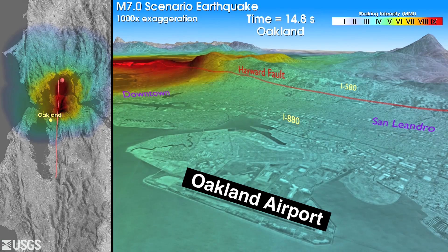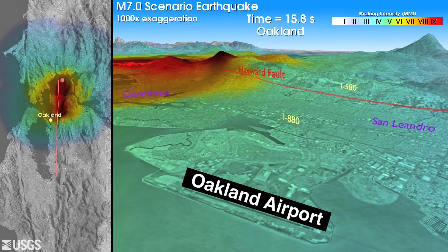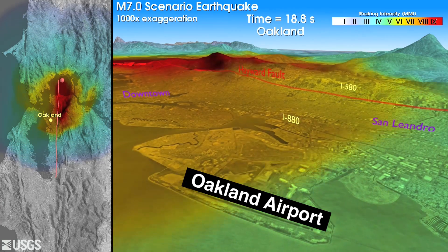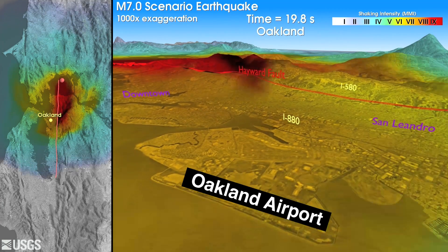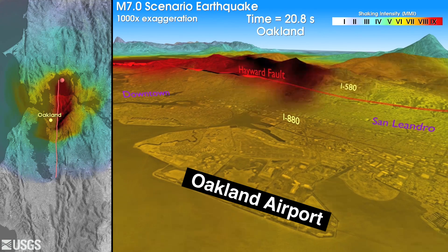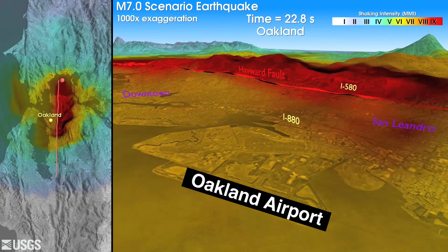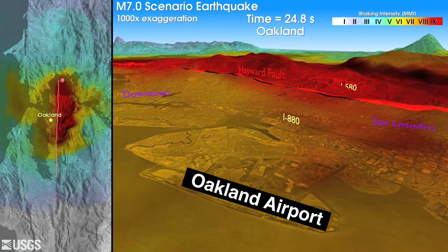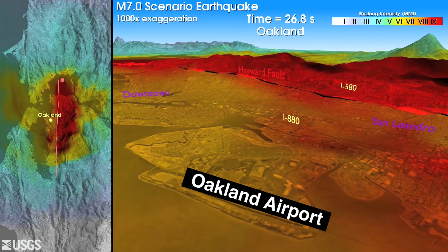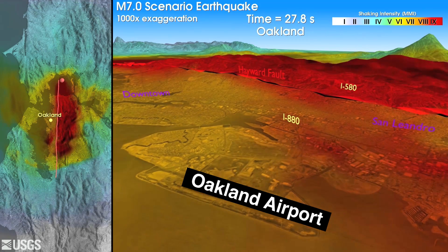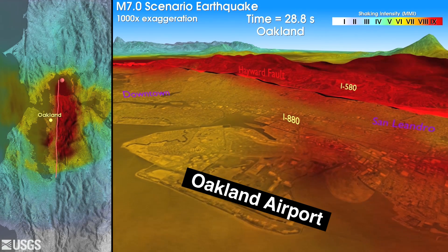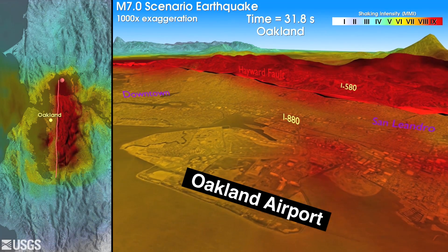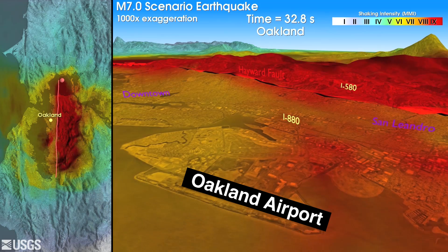The crust fractures along the fault as the seismic energy travels from the epicenter towards the south at a speed of about 7,000 miles an hour. Looking closely, you can see a rolling motion coming through. This is one of two surface wave types known as a Rayleigh wave. The second type of surface wave, which has a back and forth type of motion, is the Love wave.